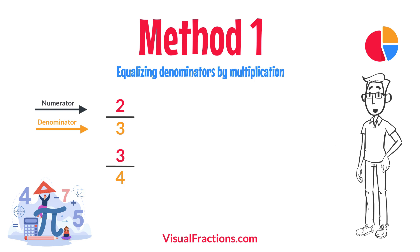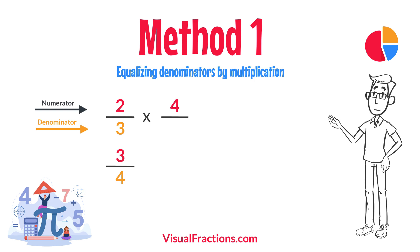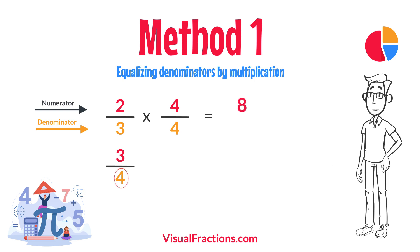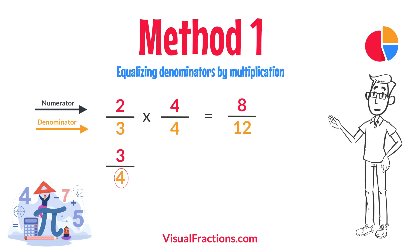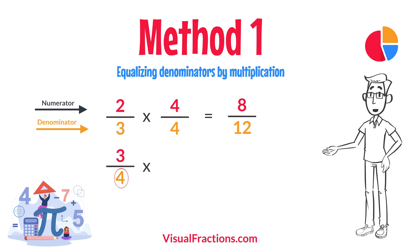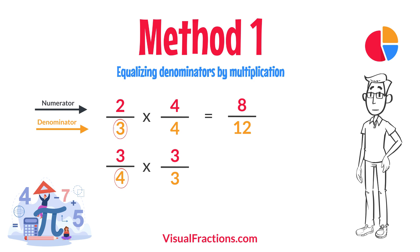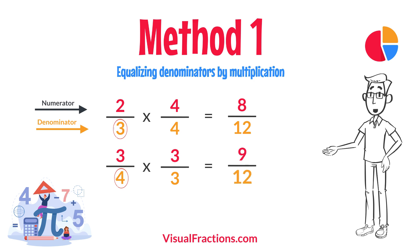For 2 thirds, multiply both the numerator and the denominator by 4, the denominator of 3 quarters. This gives us 8 twelfths. For 3 quarters, multiply both the numerator and the denominator by 3, the denominator of 2 thirds. This results in 9 twelfths.